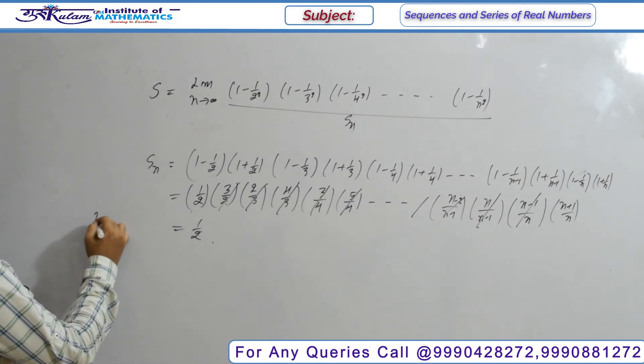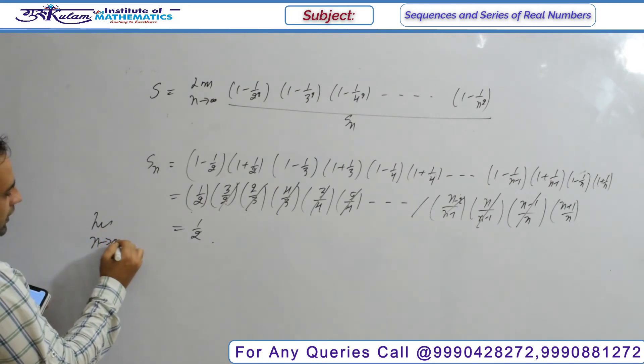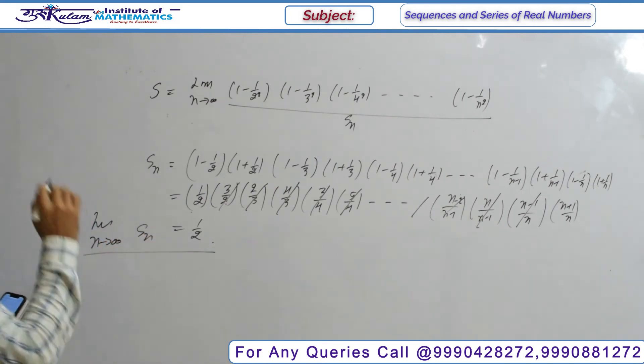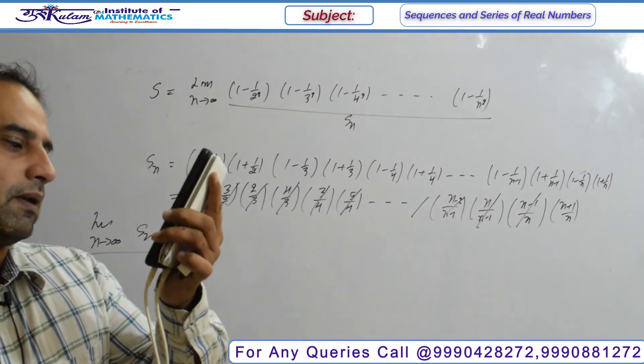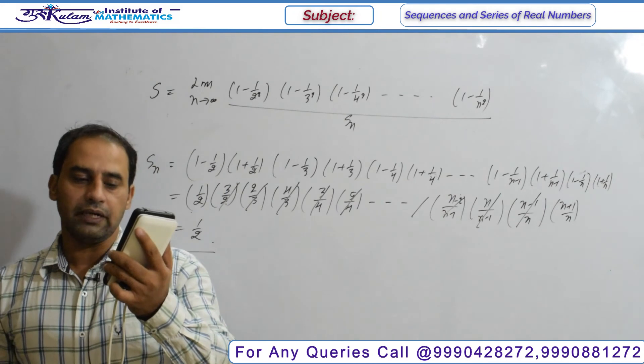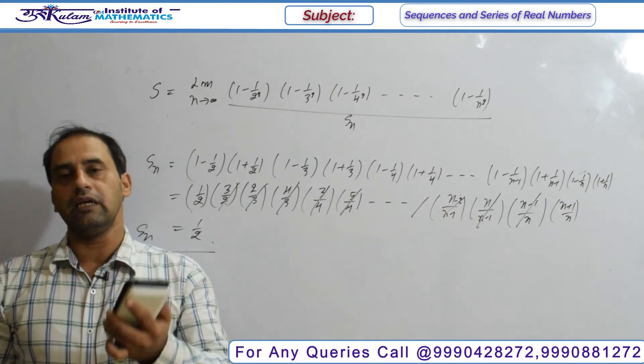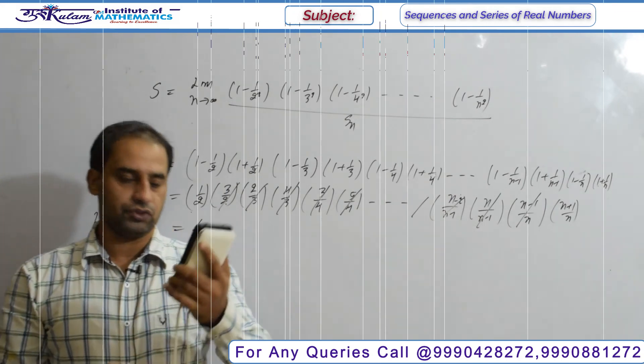As n tends to infinity, the limit of S_n equals 1/2. The remaining terms cancel out, so the final answer is S = 1/2. The remaining options are automatically false. I think it's clear. If you have any questions, you can ask.